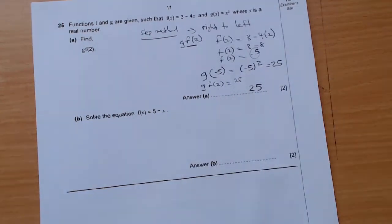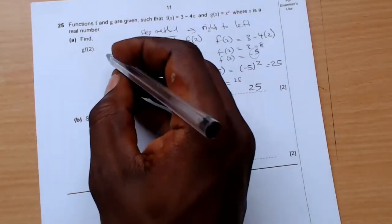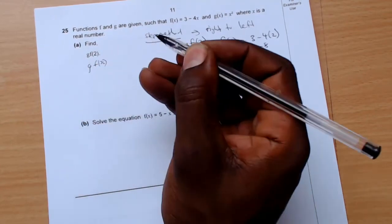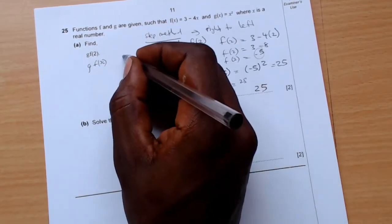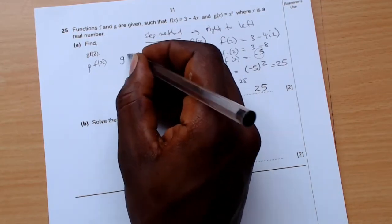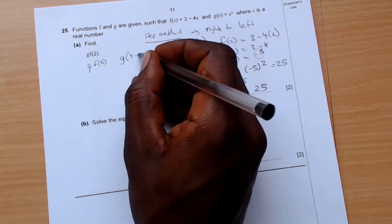That's the final answer. If you don't want to do this, you can first find g(f(x)), right? So you know that you have your g which is x squared, g(3 minus 4x).